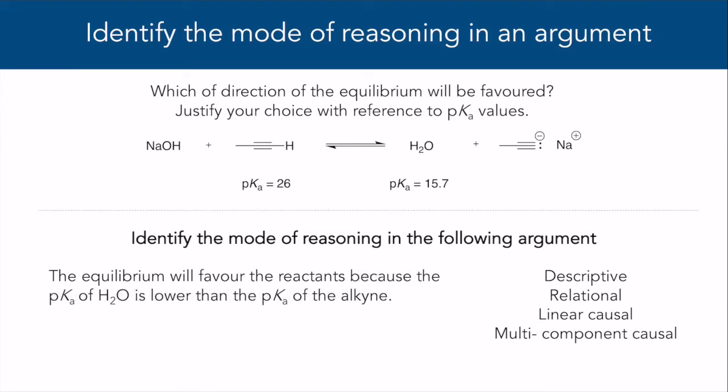Argument 2: The equilibrium will favor the reactants because the pKa of water is lower than the pKa of the alkyne. This is a relational argument. The claim and evidence are provided and linked, but there aren't any additional statements that explain why the claim and evidence are connected.